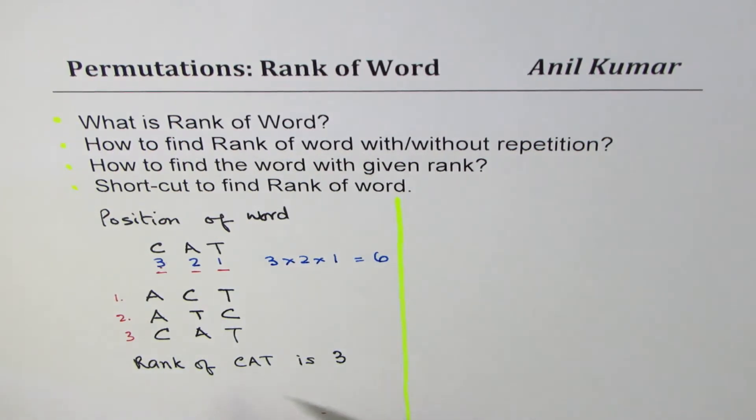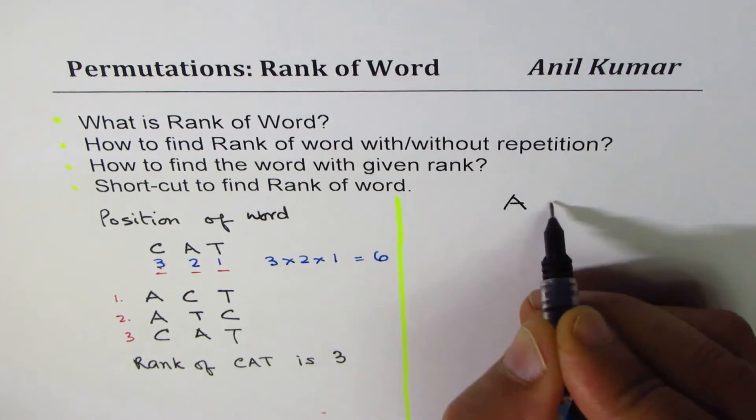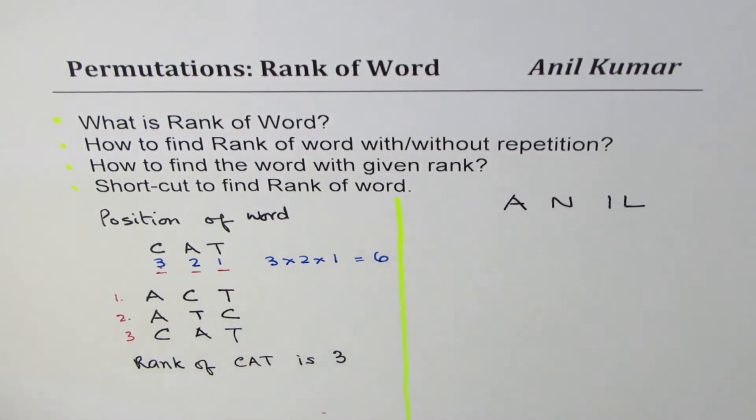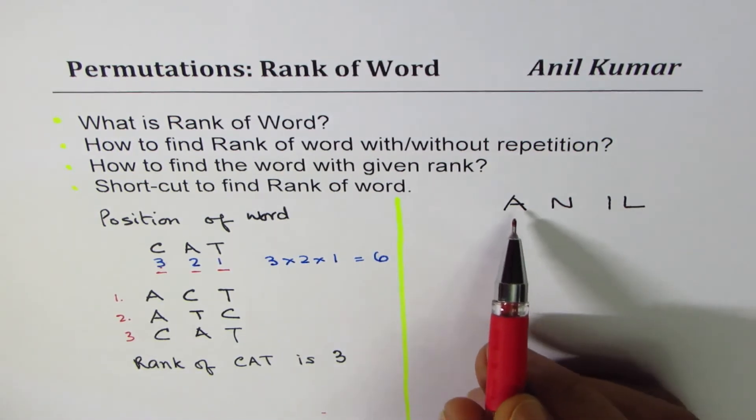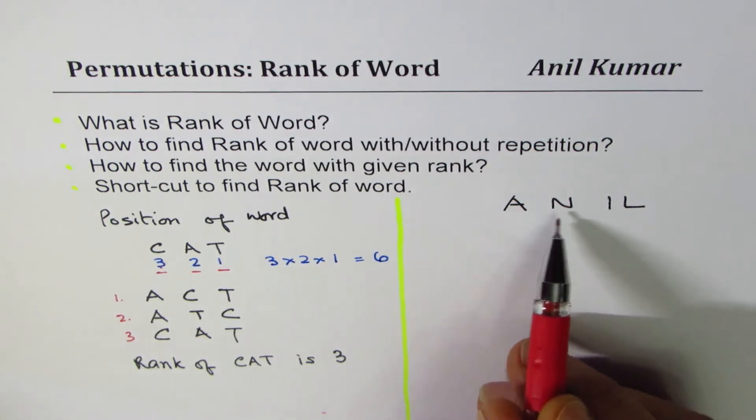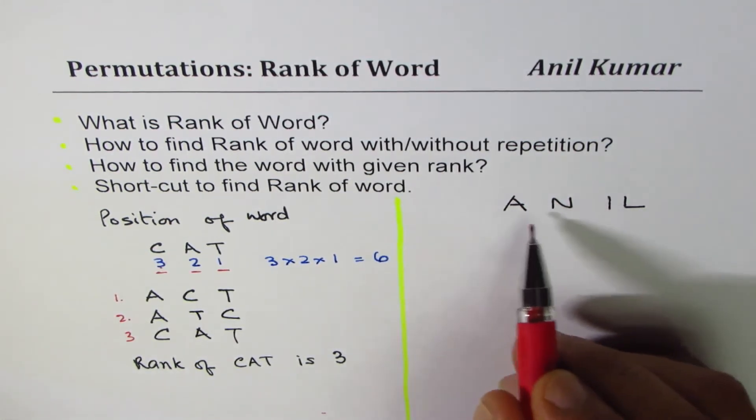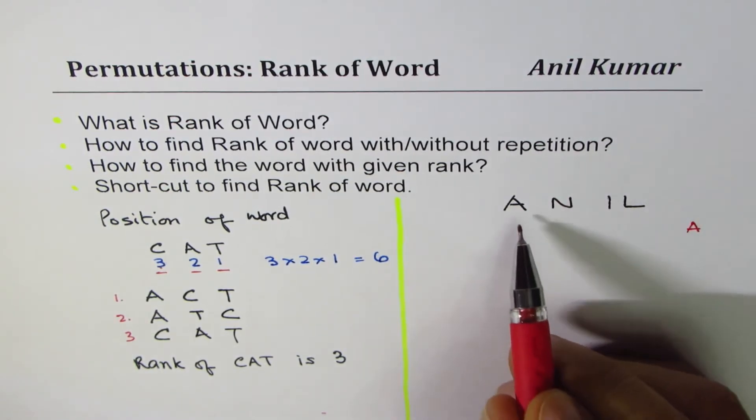I hope with this you've understood what we're trying to find when we say a rank of a word. Let me take another example. We'll take very simple examples. The other word is ANIL, A-N-I-L. Now let's go to four letters, it becomes more complicated. So what we do here is we'll adopt a better method.